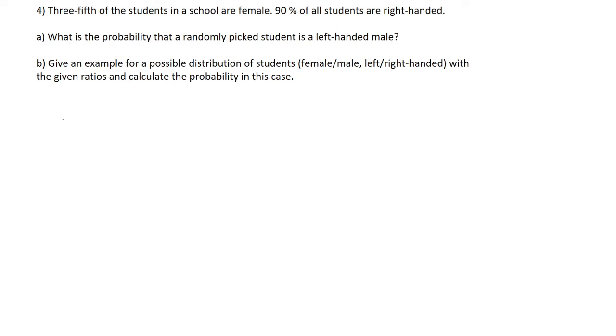So there are three-fifths. The probability of a female is three-fifths. That means the probability of a male is one minus three-fifths, which is two-fifths.